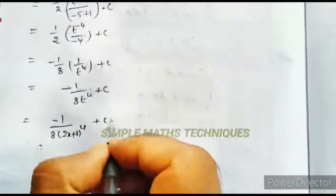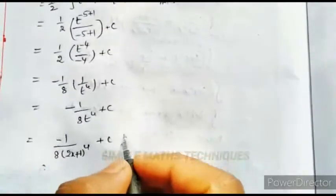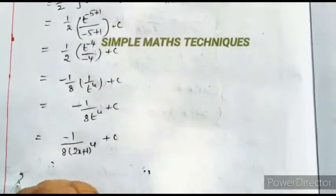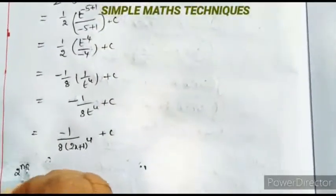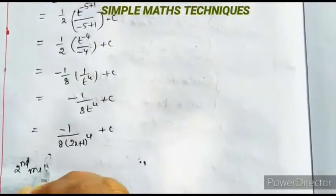Now substituting t = 2x+1 back, we get minus 1/8 into (2x+1)⁴ plus c. This is the solution of the given problem.